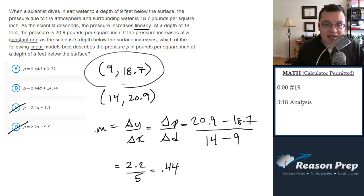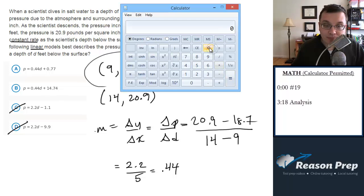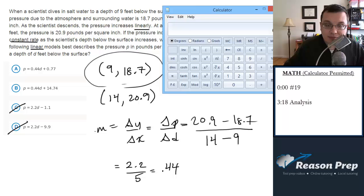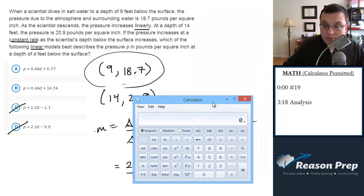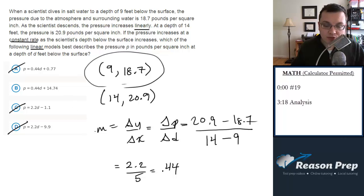Let's go ahead and test out this one. Let's look at A. 0.44 times d, so it's 0.44 times 9, and we're going to add 0.77 to it, and we get 4.73. That's not even close to 18.7, so we'll get rid of that.